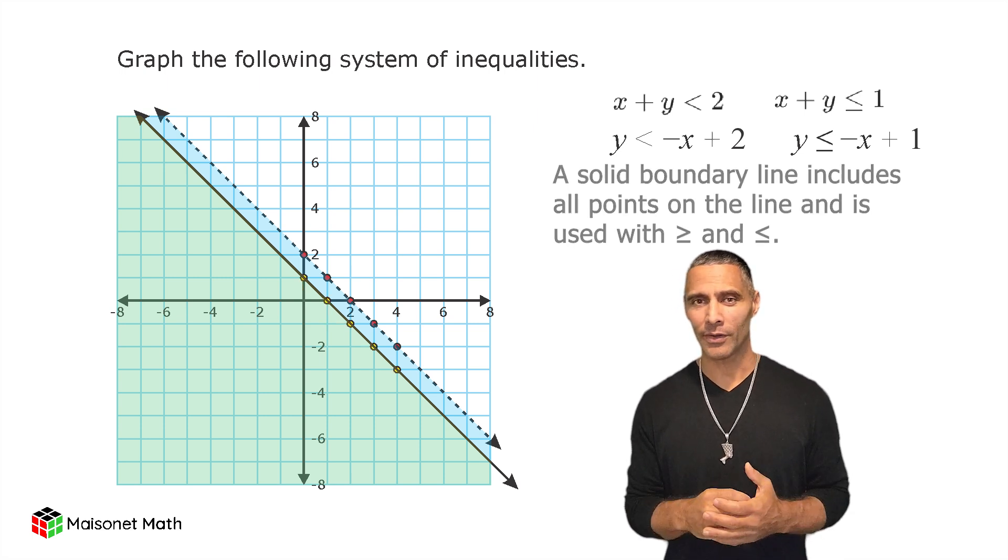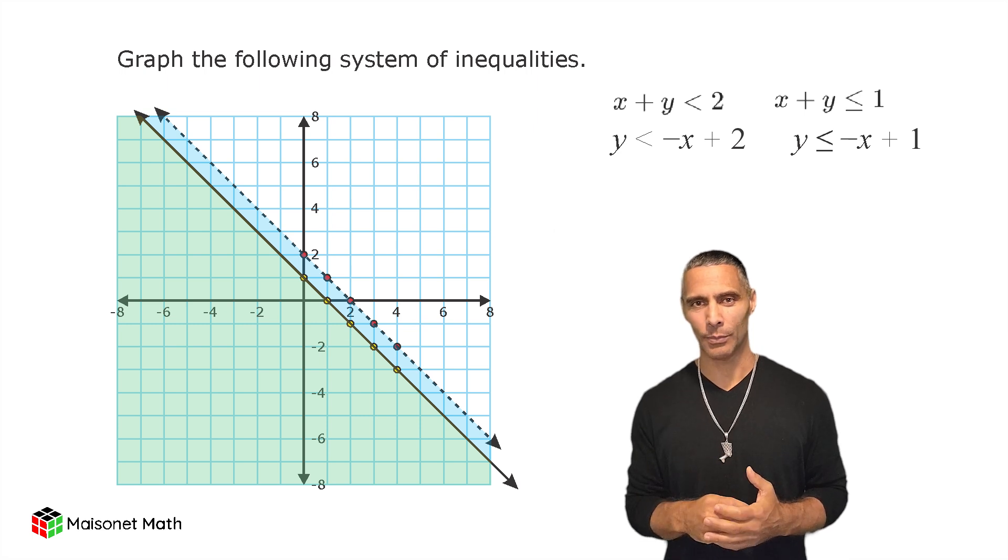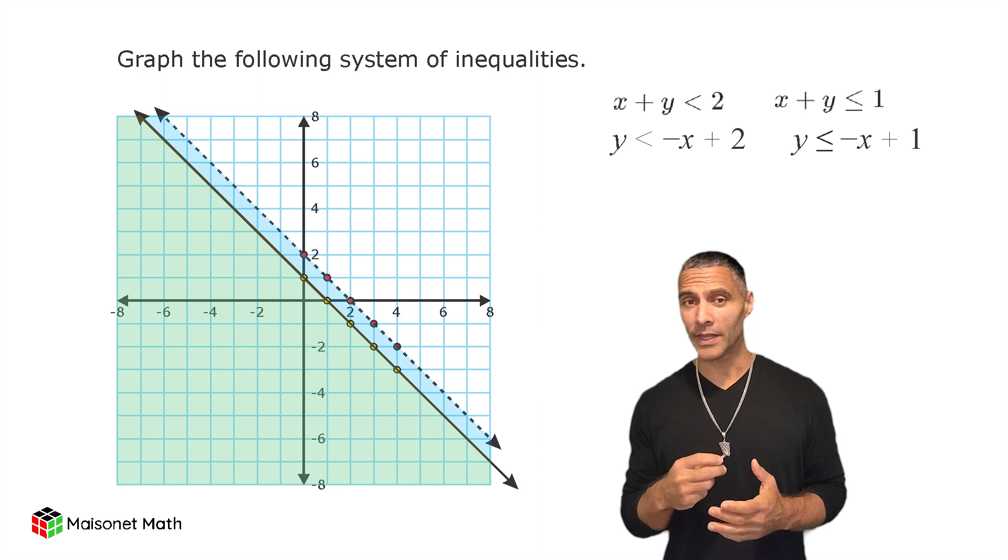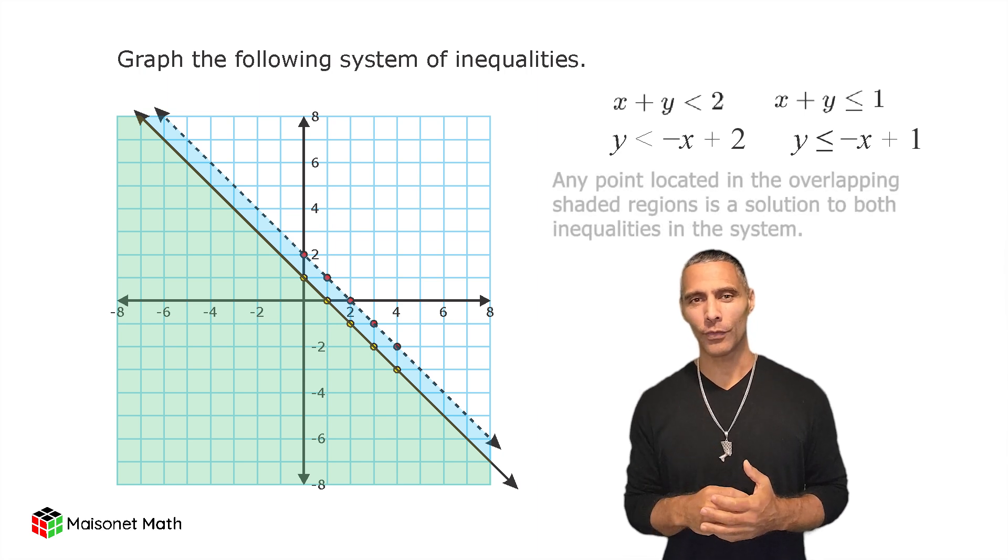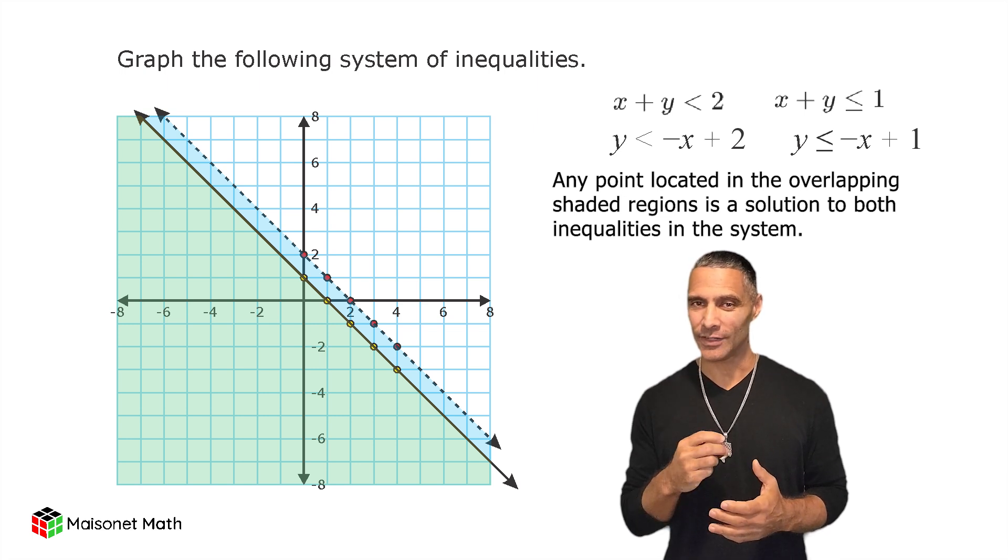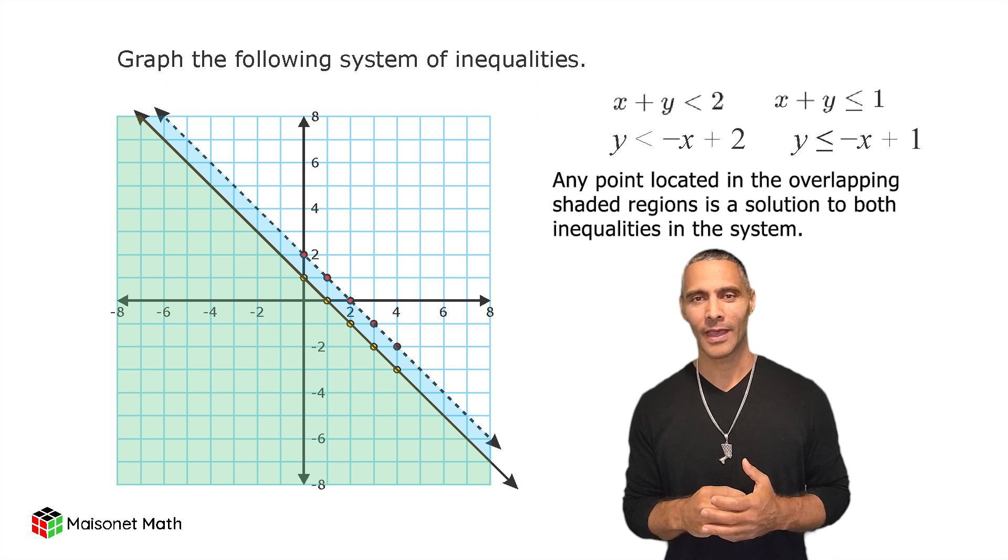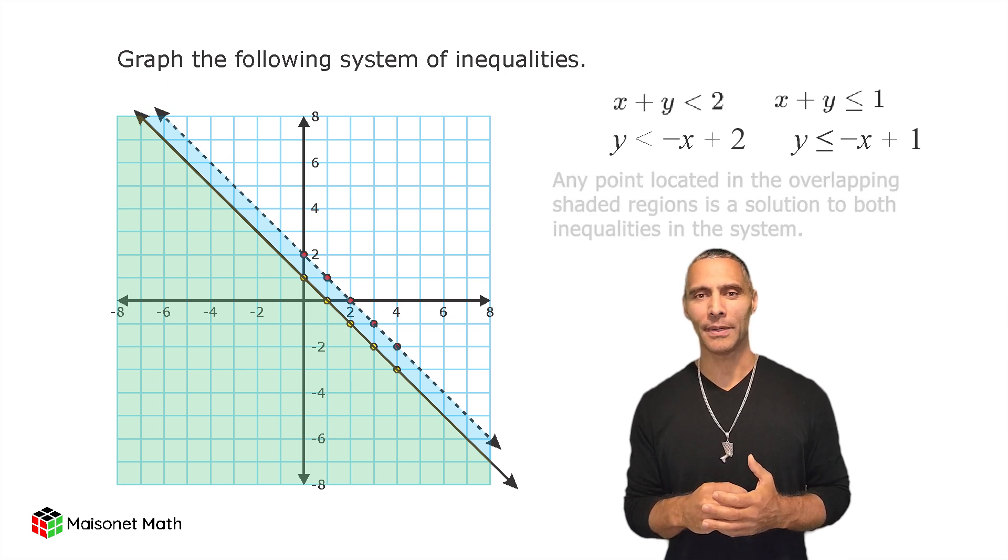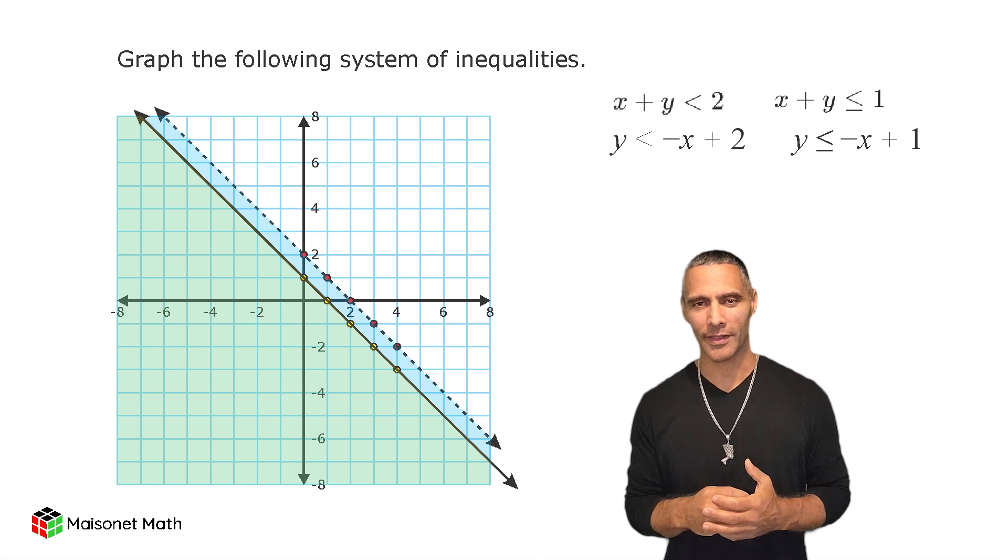Notice that both lines are parallel as they have the same slope, but different y-intercepts. The solution to the system of inequalities is the overlap of the shaded regions. The region where the shading for both inequalities intersects is the solution to the system. Any point in this overlapping region satisfies both inequalities.